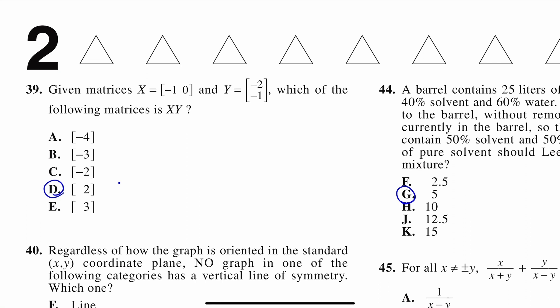Number 39, given matrices X equals negative 1, 0 and Y equals negative 2, negative 1, which of the following matrices is X times Y. So when you're multiplying matrices, you're going to multiply column 1 by row 1, so negative 1 times negative 2, and then add column 2 times row 2 and solve that out. So negative 1 times negative 2 is 2, 0 times negative 1 is 0, and 2 plus 0 is 2, which is letter D.